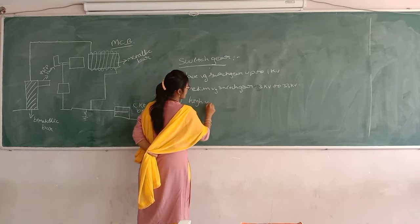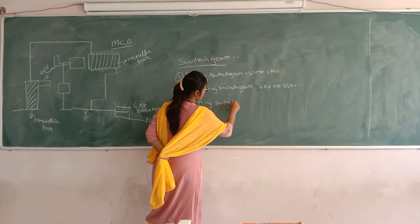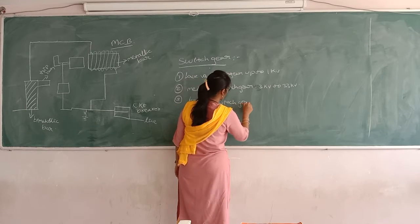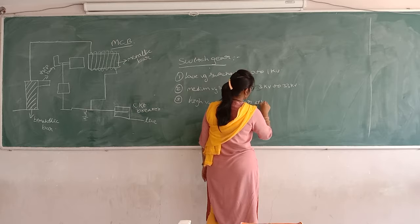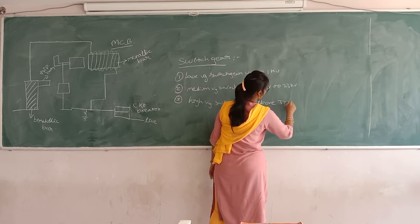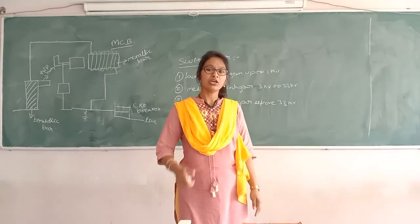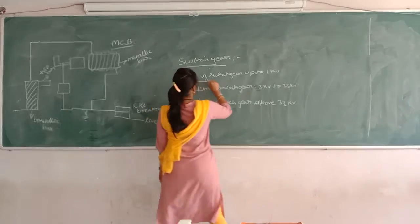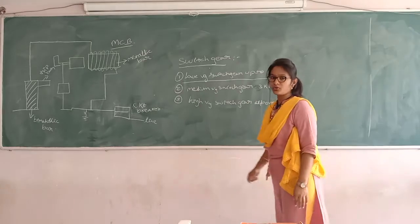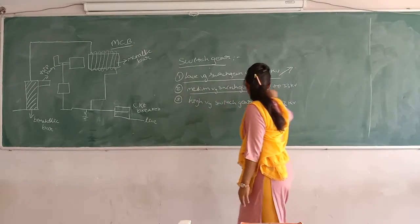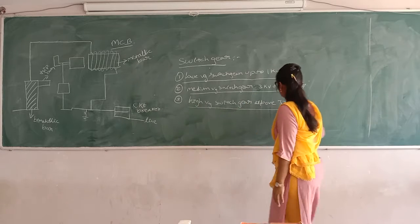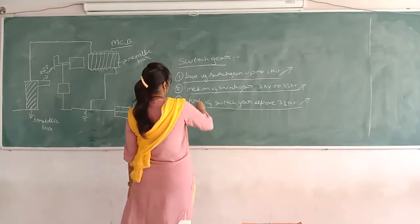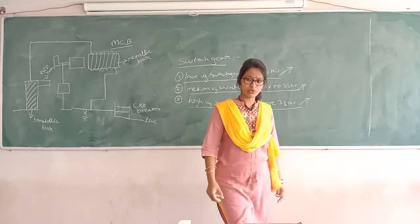High voltage switchgear operates above 33kV. The switchgear is classified into three types. Low voltage switchgear is used in domestic appliances, medium voltage switchgear is used in industries, and high voltage switchgear is used in substations. Today we are going to discuss about the low voltage switchgear, up to 1kV.